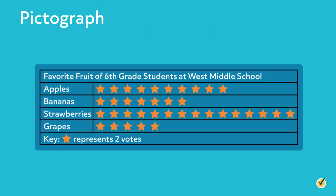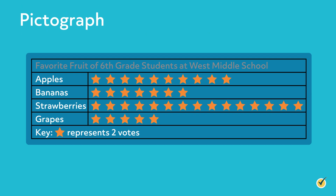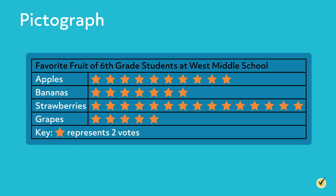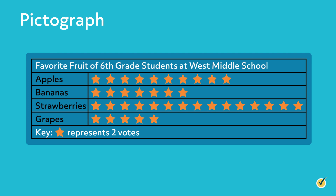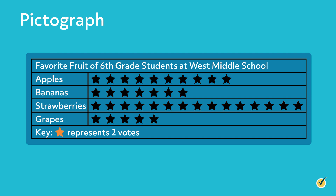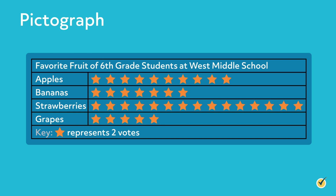Consider the pictograph shown. In this example, the title is Favorite Fruit of 6th Grade Students at West Middle School. The categories are apples, bananas, strawberries, and grapes. The symbol, a star, represents the number of students who voted for a favorite fruit. At the bottom of the pictograph is a key, which tells us that one star represents two votes.